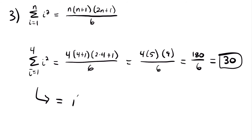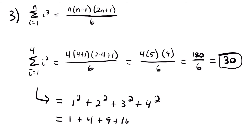To check, doing it individually: 1 squared plus 2 squared plus 3 squared plus 4 squared. We plug each i into i squared — starting at i equals 1, then 2, 3, and 4. This gives 1 plus 4 plus 9 plus 16, which equals 30. Both methods give the same answer. Of course, the formula is much more helpful when adding many more terms than just four.